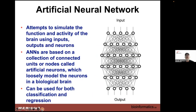So we're talking about artificial neural nets. They try to simulate both the function and activity of the brain — whether the human brain or drosophila brain. You've got inputs, outputs, and what we call neurons. The connections — you're seeing circles here — these are nodes representing a neuron, and the lines from those are essentially the axons or neurites connecting one neuron to another.